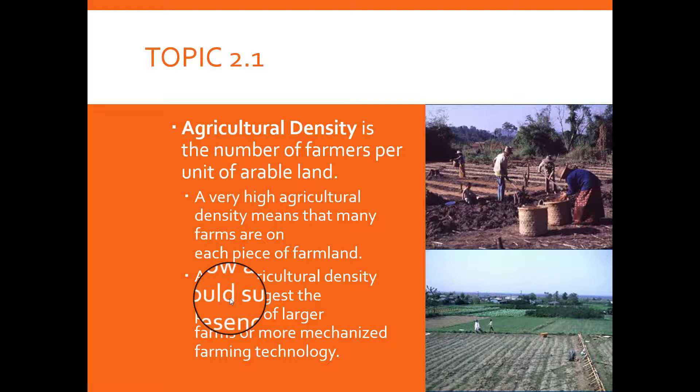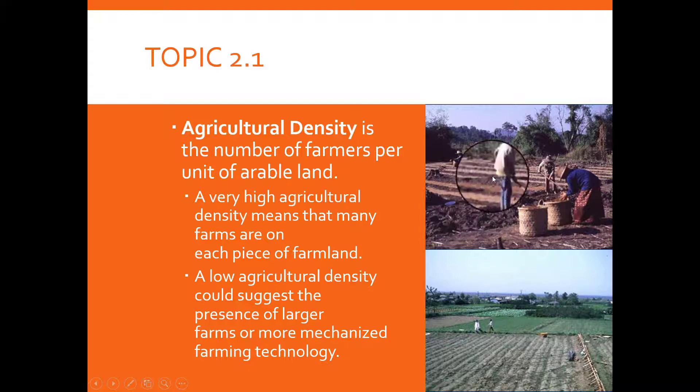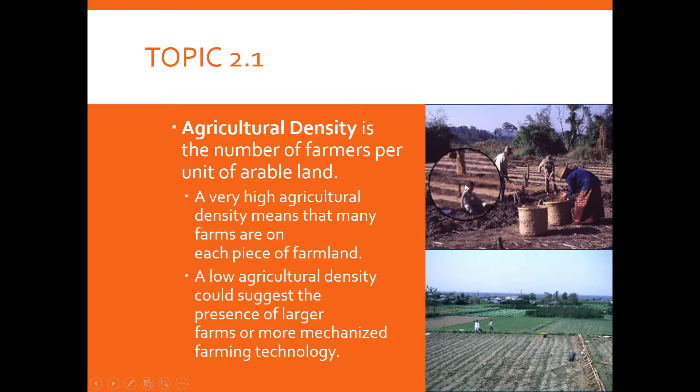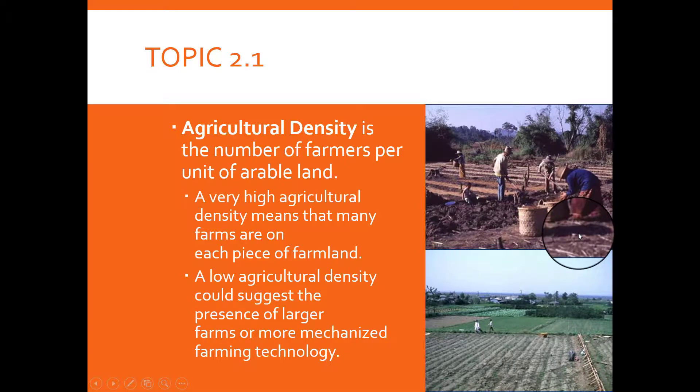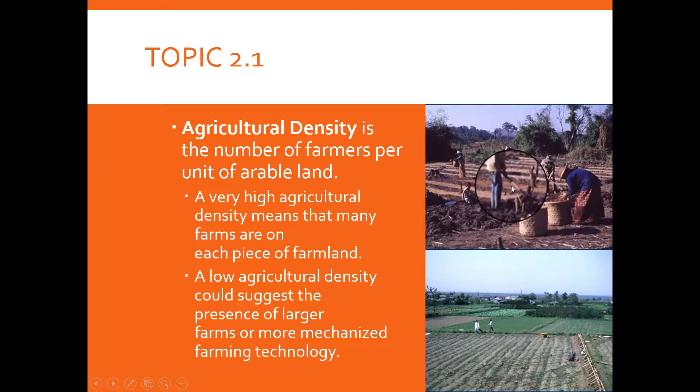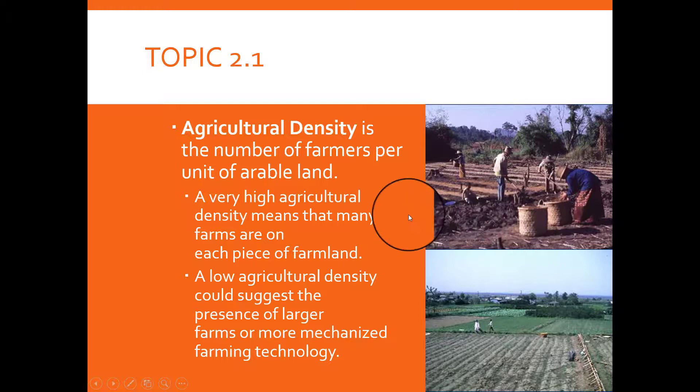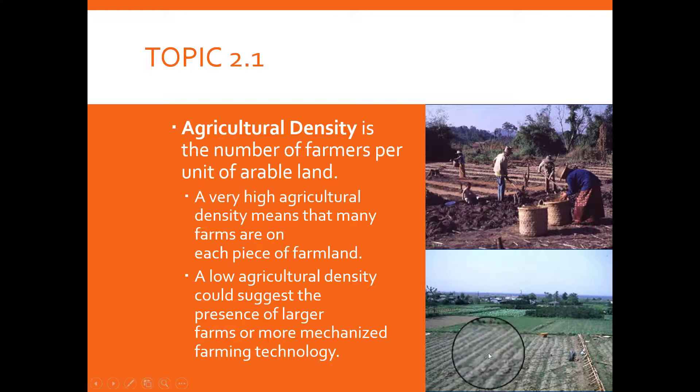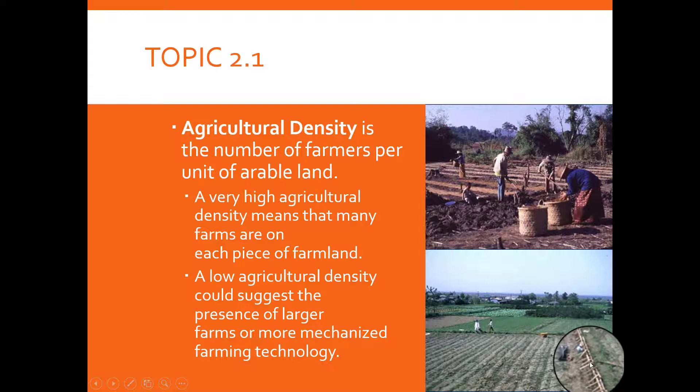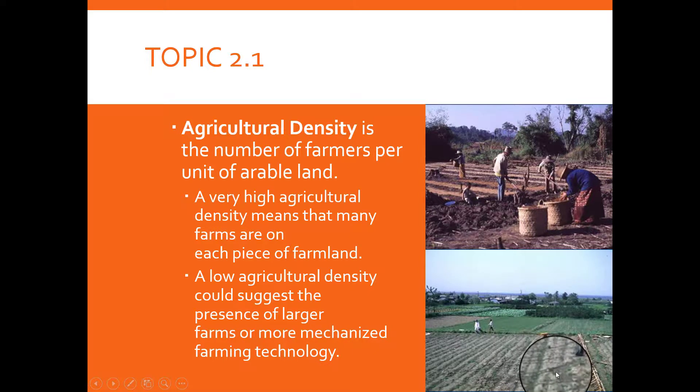If you look at this picture, the picture up here has about five people. We would say from this picture that there's more people here because they have to farm on the land. Whereas on the bottom, you see only two people, but there may be mechanized farming technology or machines, farming machines to help harvest the food or the crops that they're growing here.